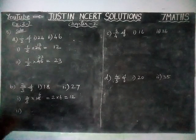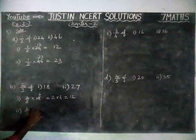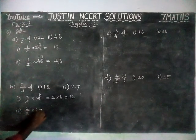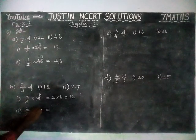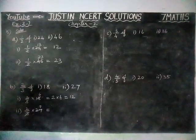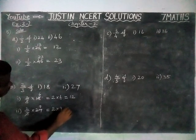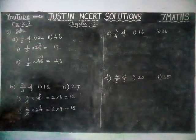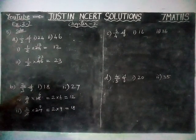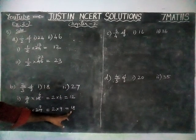Next, second problem: 2 by 3 of 27 is equal to — 3 goes into 27 nine times. Now, 2 into 9: 9 twos are 18. So, 2 by 3 of 27 is equal to 18.